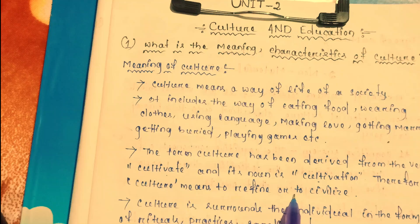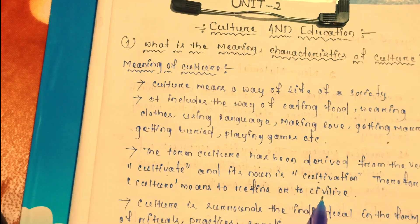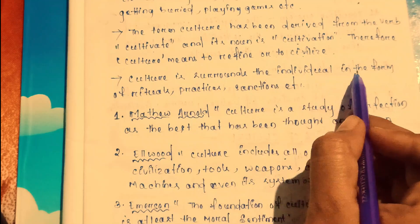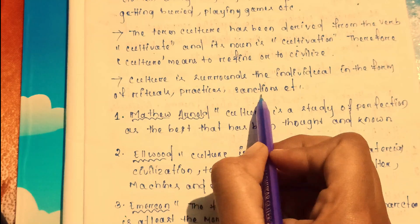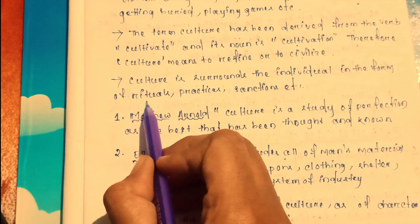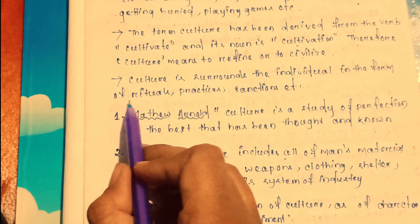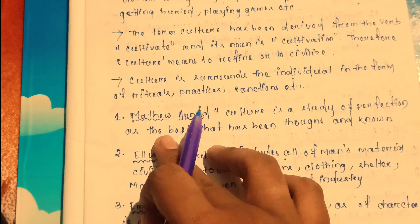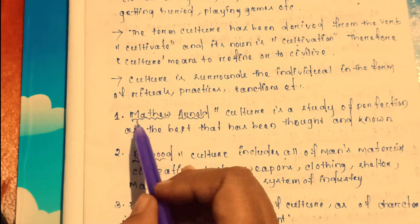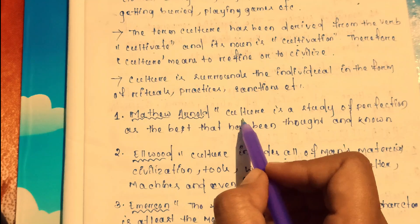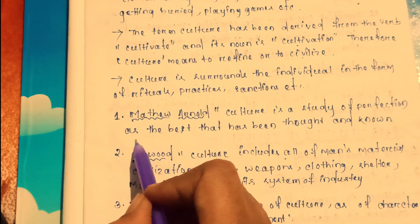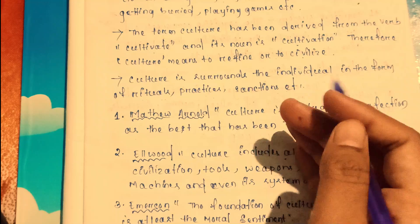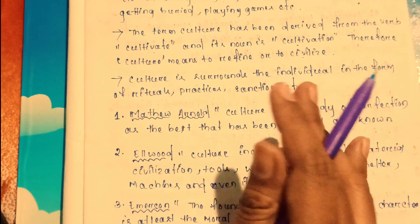Culture means refined and civilized. Culture surrounds the individual in the form of ritual practice and sanction. According to Matthew Arnold, culture is the study of perfection — the best that has been thought and known. Culture is the study of perfection.